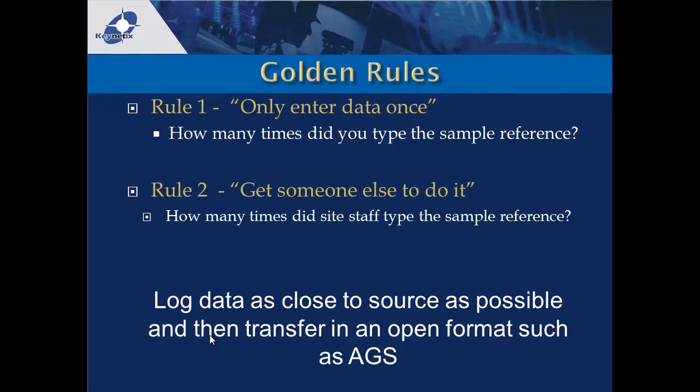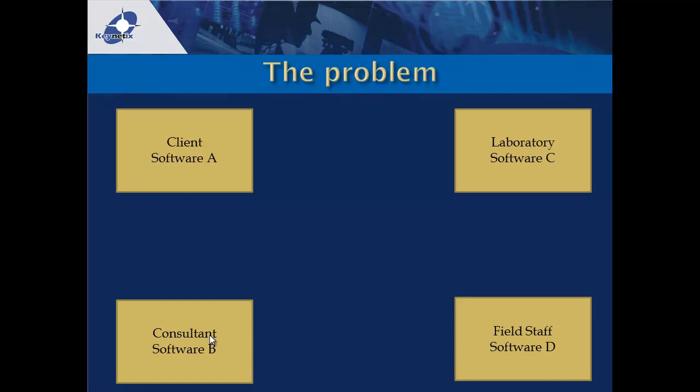AGS files might be an answer here. The AGS — the Association of Geotechnical Specialists in the UK — analysed this problem in the late 1980s. Consider four companies working on a particular project: a client using software A, field staff using software D, and two people in between using softwares B and C. The challenge is getting data out of software D and into software B.